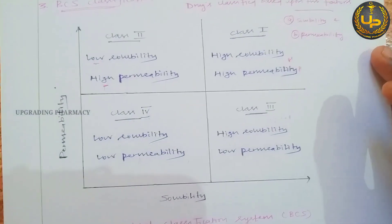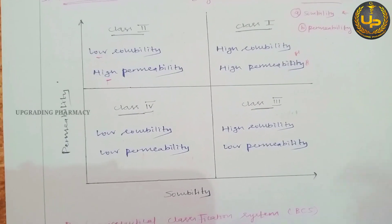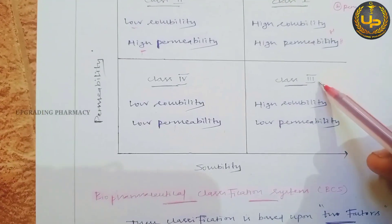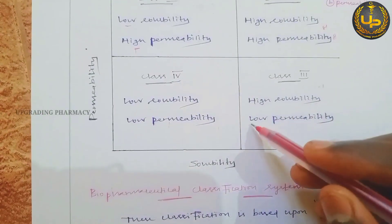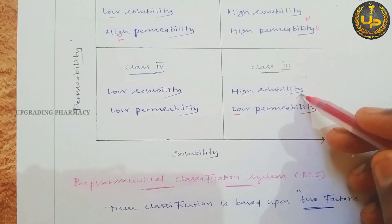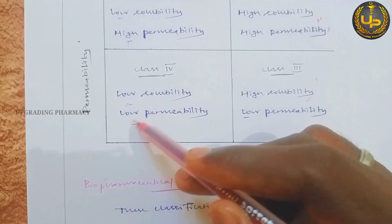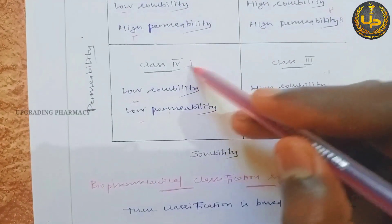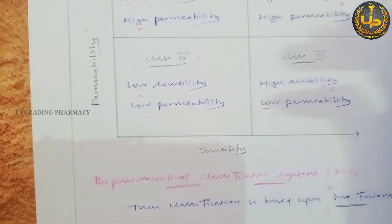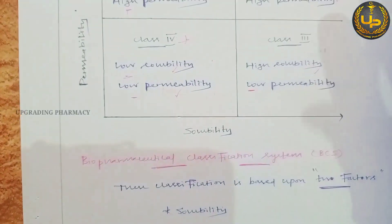Class 2 is low solubility and high permeability. Class 3 contains high solubility and low permeability. Class 4 is low solubility and low permeability — this type of drug is very difficult to formulate because both critical factors are unfavorable.